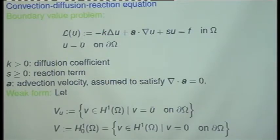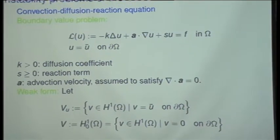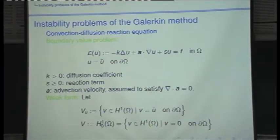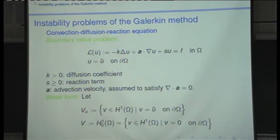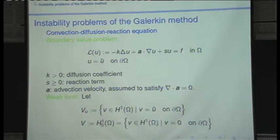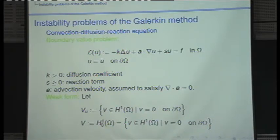Let's get into the problem. We want to solve the boundary-value problem: find the scalar function U such that L(U) equals a right-hand side F, where the operator L has three terms. The first is the diffusive term: minus K times the Laplacian of U. The second is the convective term: A dot gradient of U, where A is a given velocity field. The third is linear in U: S times U, a zero-order term. So this is a second-order PDE with diffusion, convection, and reaction.